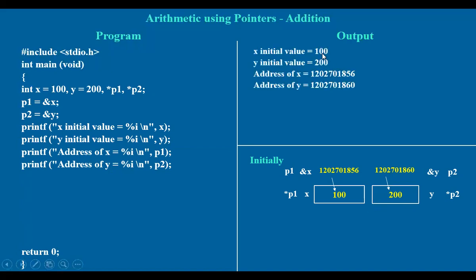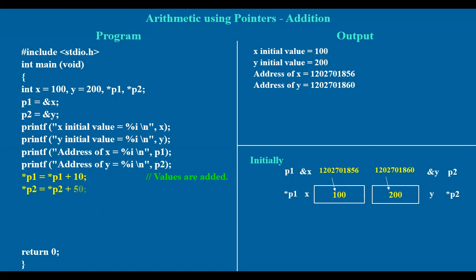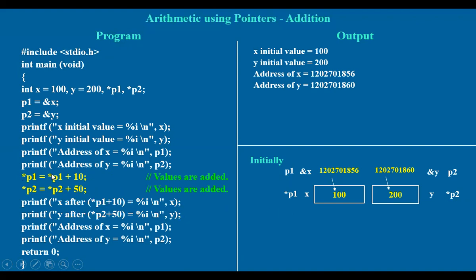You get the values: x = 100, y = 200, and these are the values of x and y. Now let us do a small operation here — let us do some addition. I want to add 10 to star p1. Star p1 is nothing but the value of x, which is 100. I want to add 10 here to this 100 and put it back into star p1. Similarly, I want to add 50 to star p2. Star p2 is 200, and I want to add 50 to it.